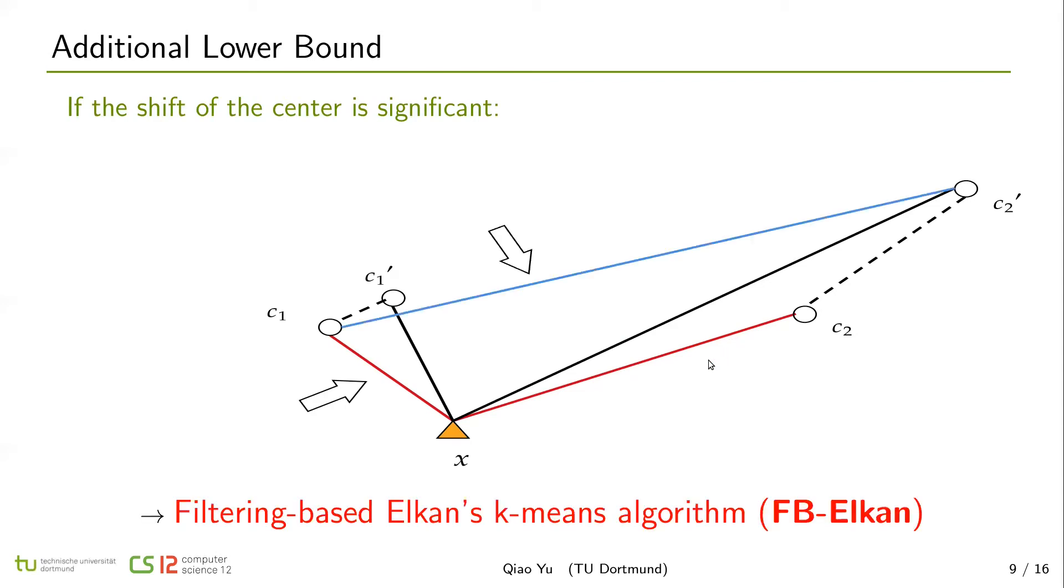However, in our new lower bound, we alleviate this problem by connecting c1 to c2' and use c1 c2' minus x c1 as the additional lower bound of x c2'.